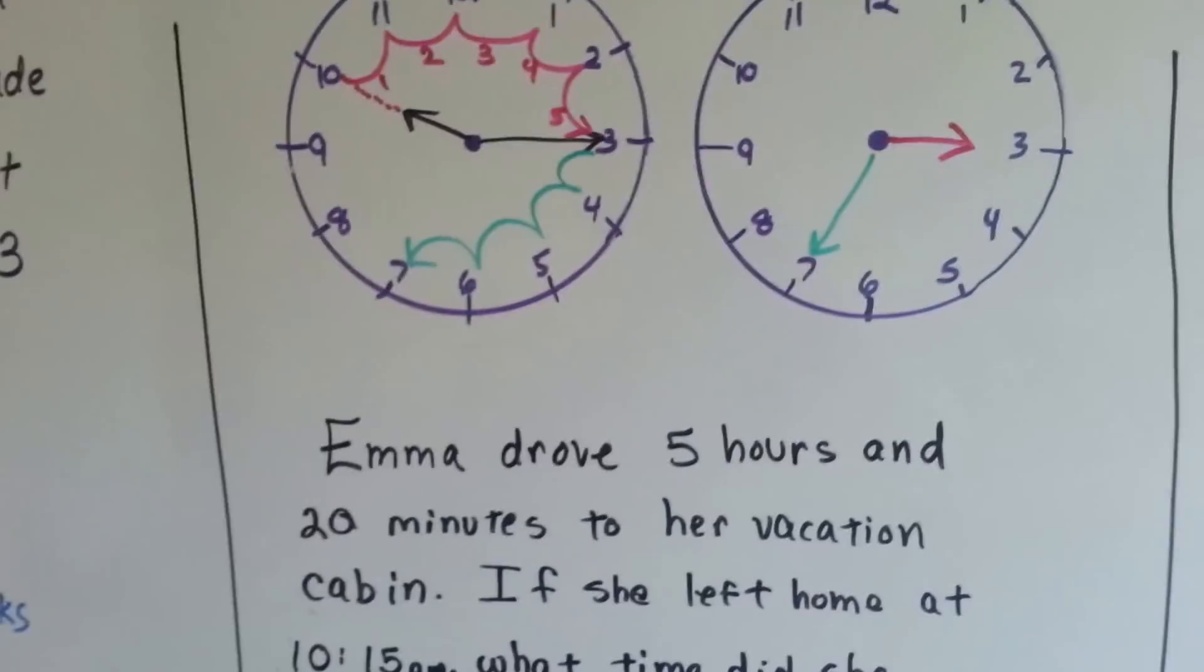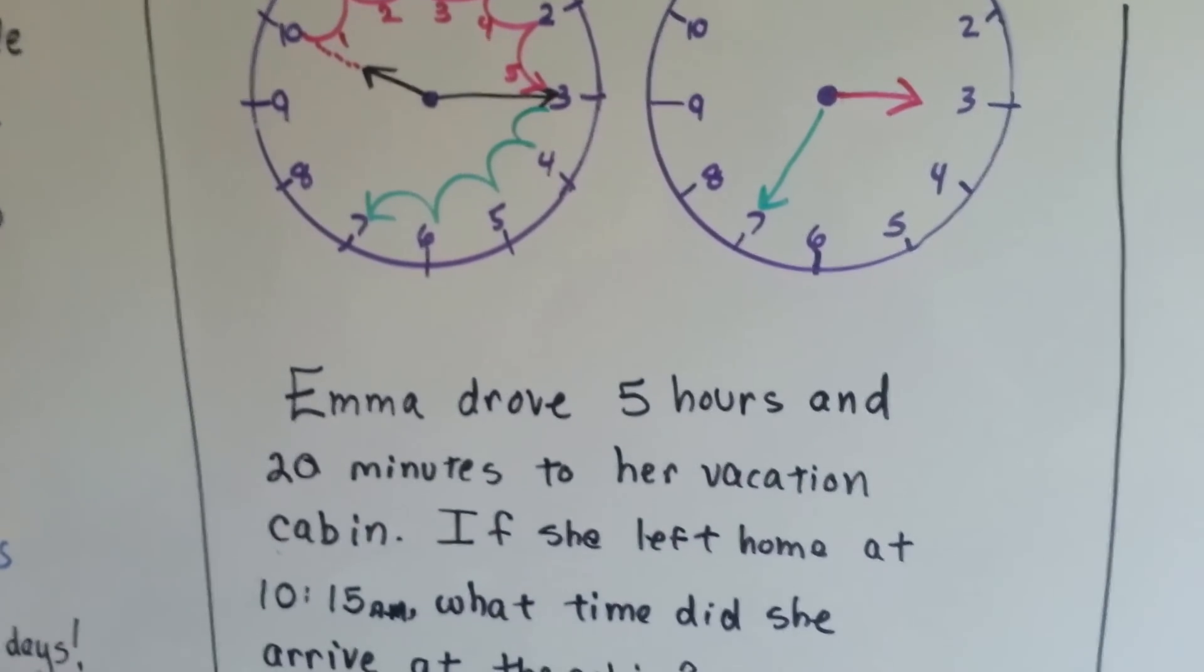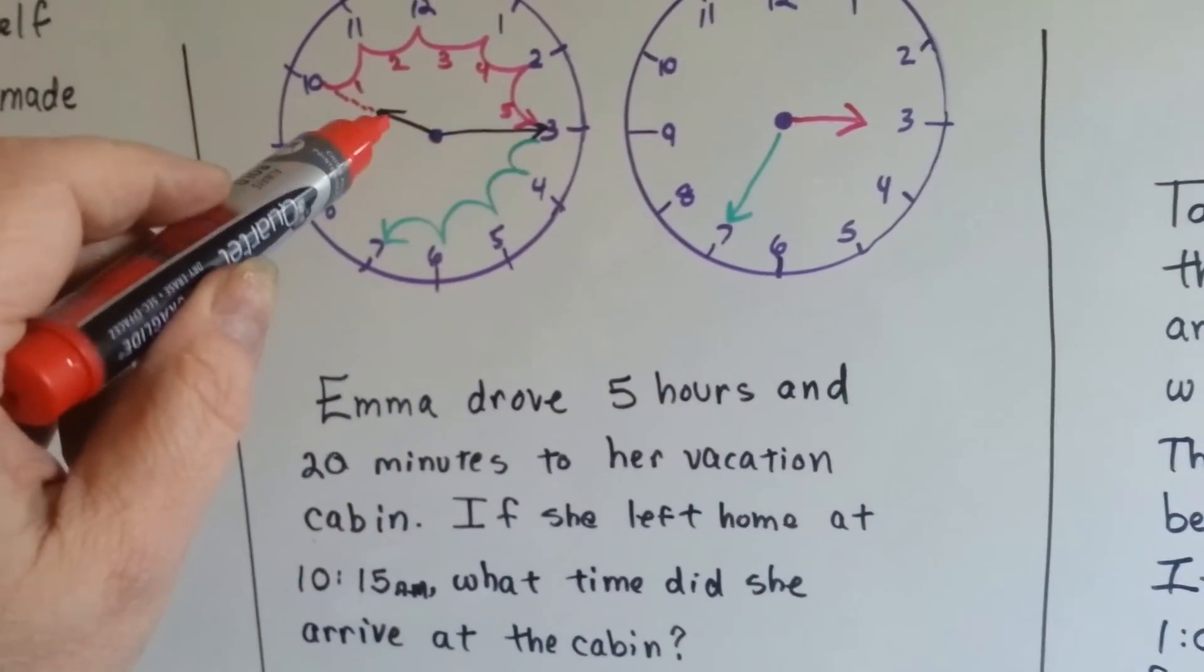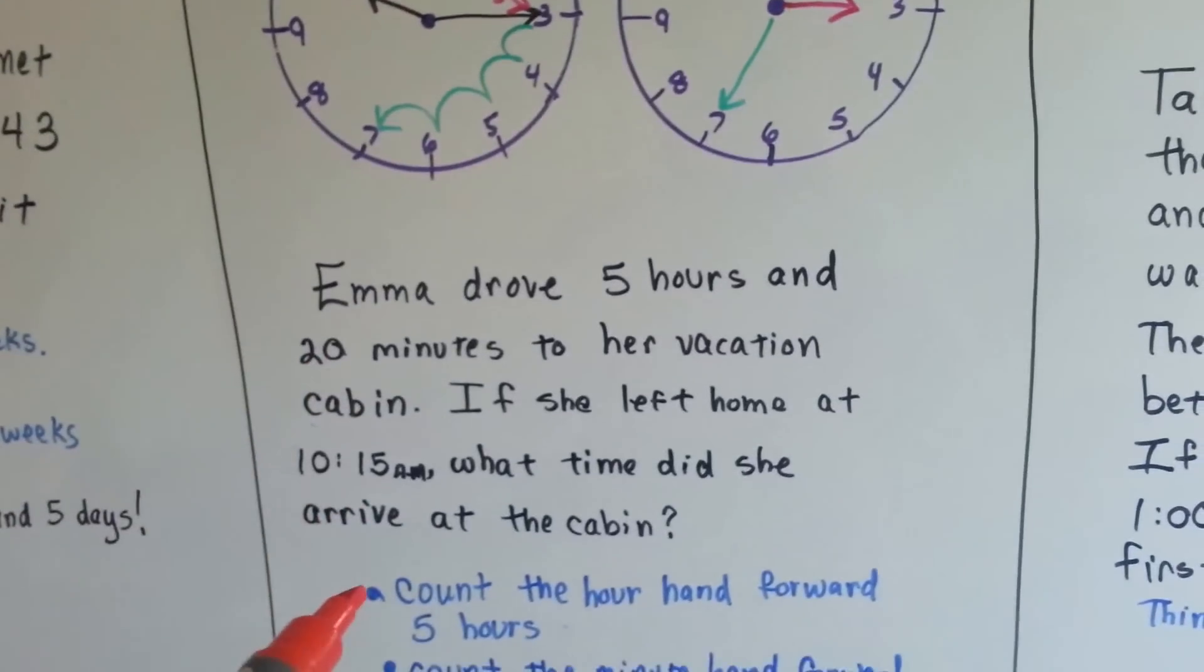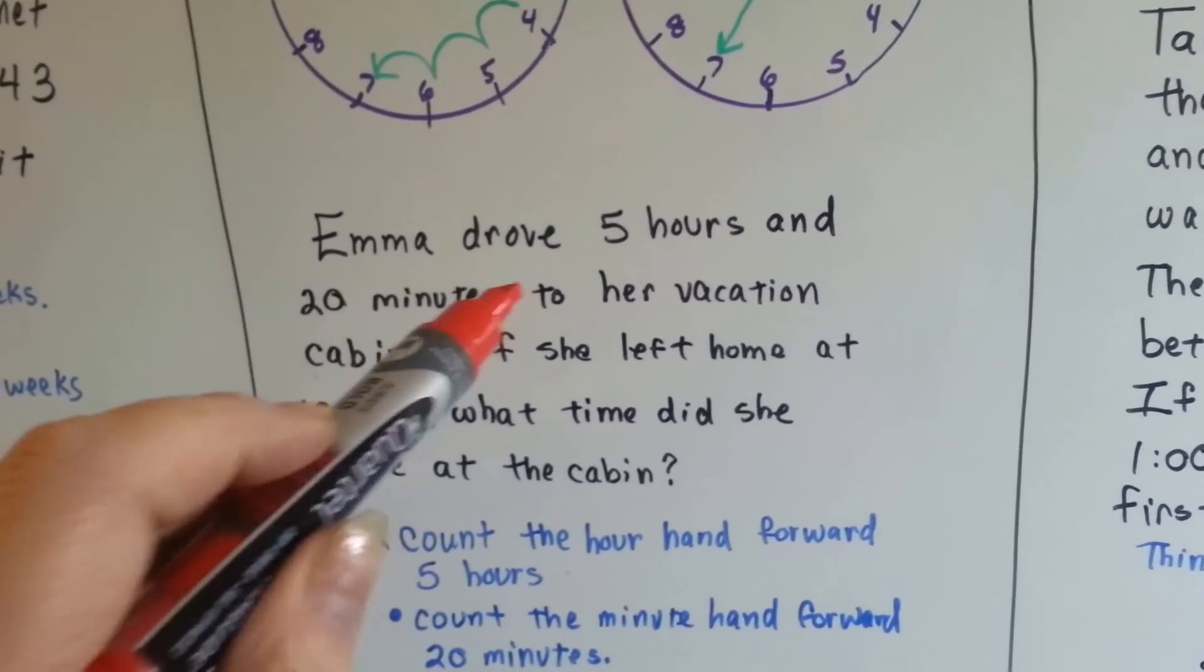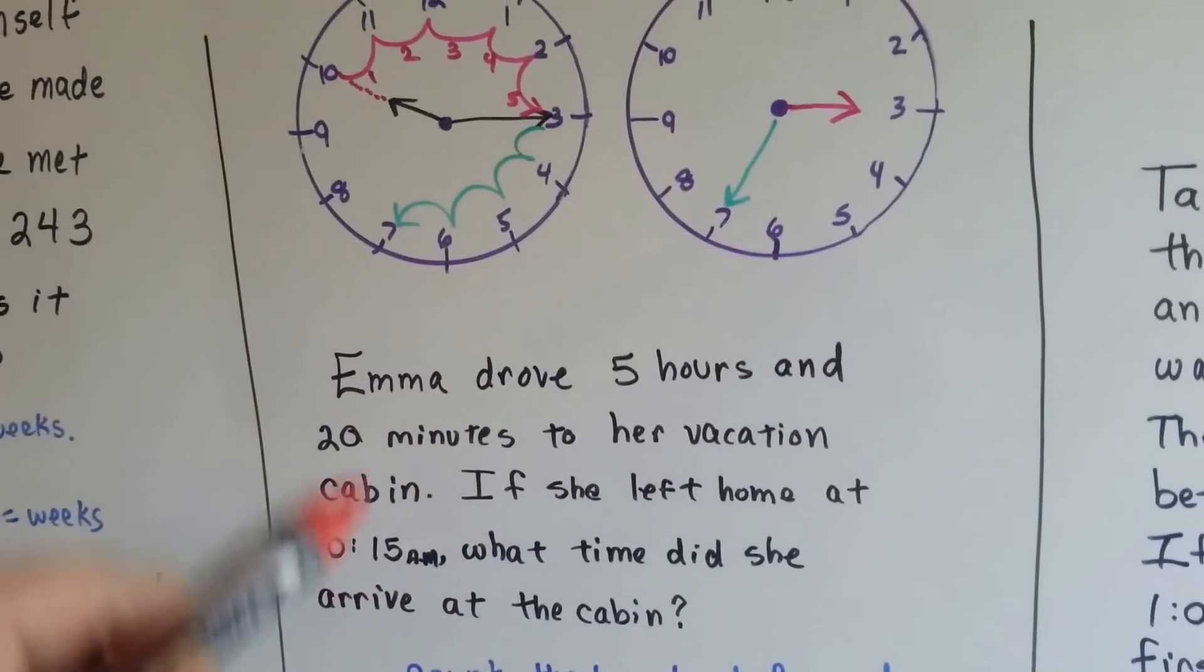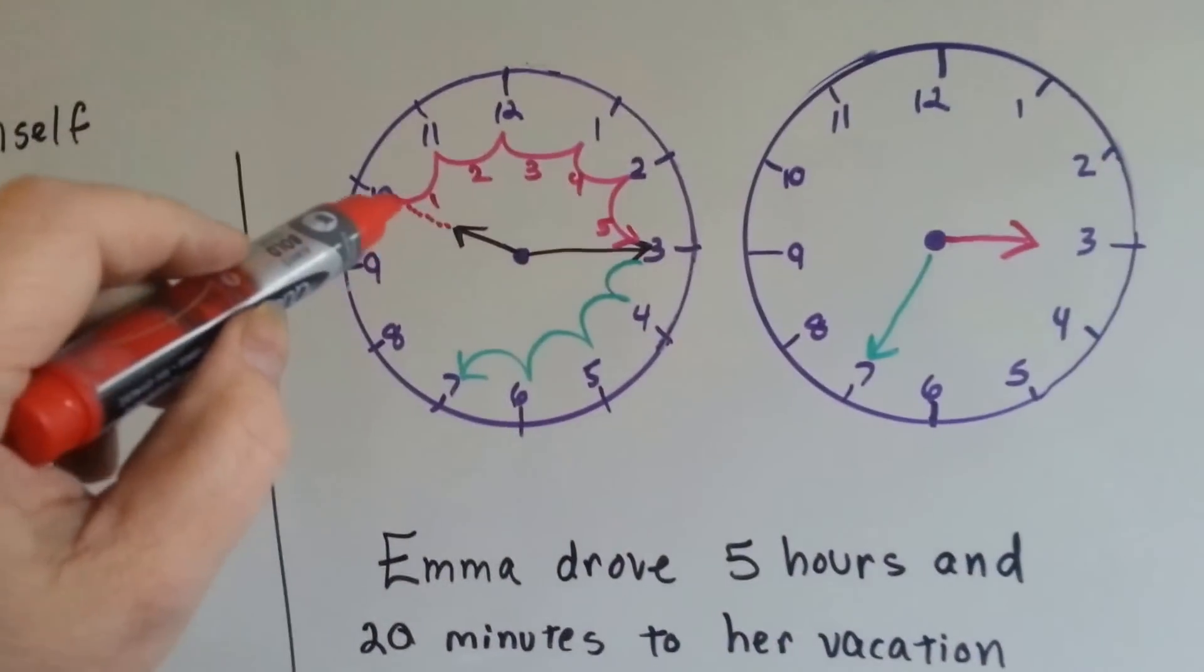Emma drove five hours and 20 minutes to her vacation cabin. If she left home at 10:15 a.m., what time did she arrive at the cabin? So here's the clock. That's 10:15 a.m. when she left, and we know she drove for five hours and 20 minutes. So we're going to count the hour hand forward five hours, and then we're going to count the minute hand forward 20 minutes, because that's the amount of time she drove.